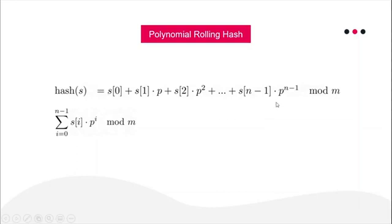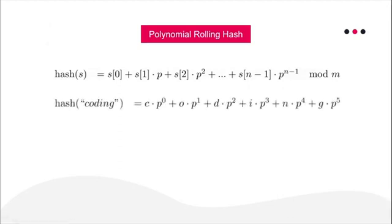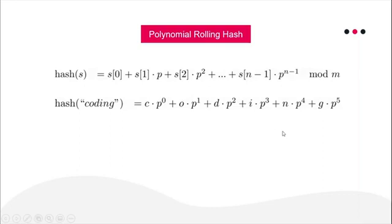To make things clear with an example, let's take the string "coding". The hash value of "coding" will be: c times p^0 plus o times p^1 plus d times p^2, and so on up to g times p^5, where p is a prime number. Usually p is chosen just greater than the character set size. If we use only small English letters (26 characters from a to z), p can be 29 or 31.